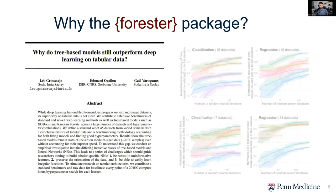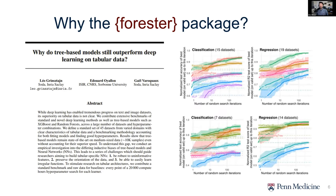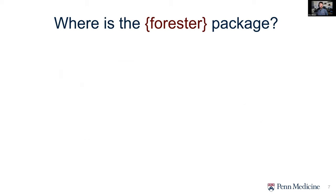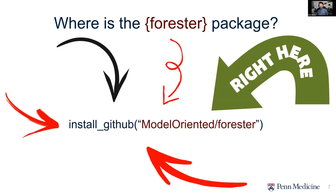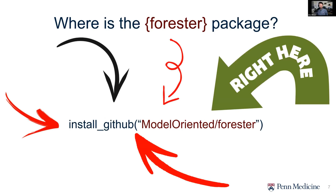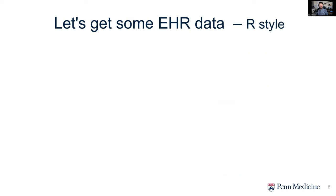These models have been benchmarked against other things. Leo has a great paper — I don't have time to get into it here, but I'll leave that for you to read if you're interested in how these things benchmark. And where can you get Forrester? You can get it on GitHub — install it and get started right away. So let's do that. Let's get started with some EHR data, R style.